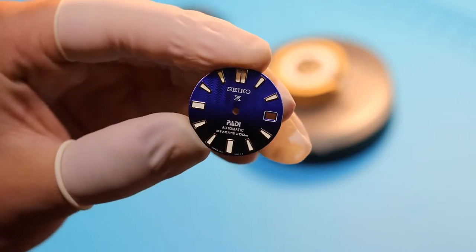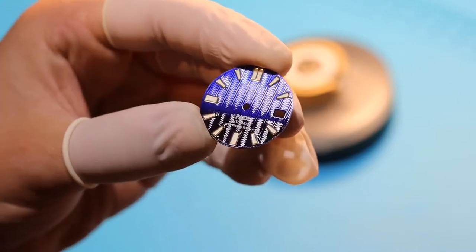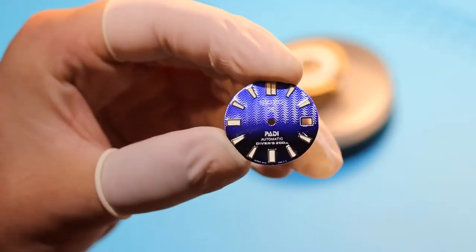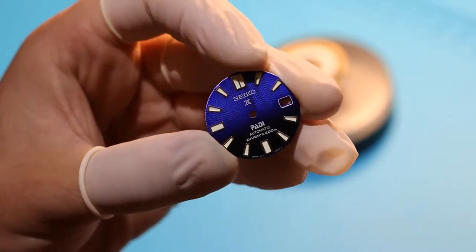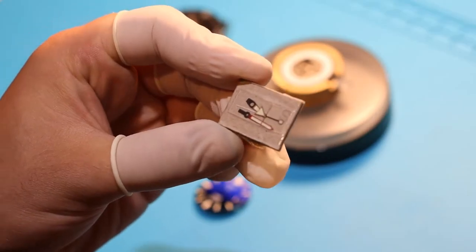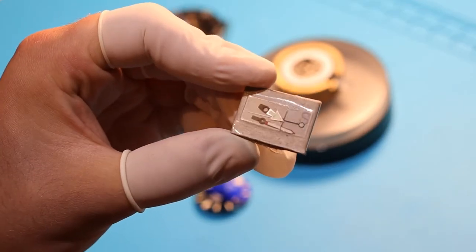The dial we're going to be using on this one is this beautiful Paddy Wave dial from the SPB-07. I love this style. It resembles the ocean in that it's brilliant blue on top and fades to dark black, and it's going to match great with our Batman bezel insert. To go along with the dial, we're also going to be using some hands from the SPB-07 as well.